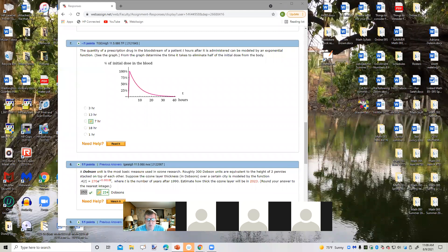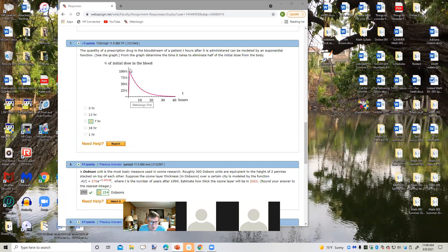From the graph, determine the time it takes to eliminate half of the initial dose from the body. Okay. So this is time in hours. So basically the initial dose, 100% of the dose is administered at the beginning of the problem. Okay. As hours go by, the amount of the initial dose still in the bloodstream decreases exponentially. So when is half of it eliminated? That would be when 50% of it is still present, which would be right there. Now, our scale, each of these little hash marks is two. I can tell that because this is 10, 12, 14, 16, 18, 20.